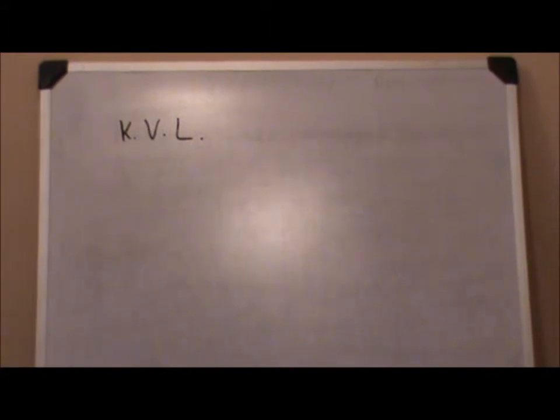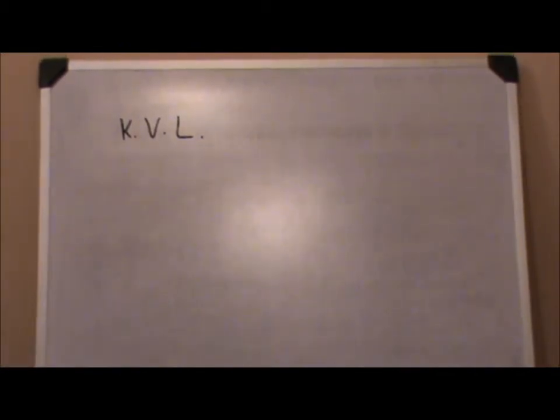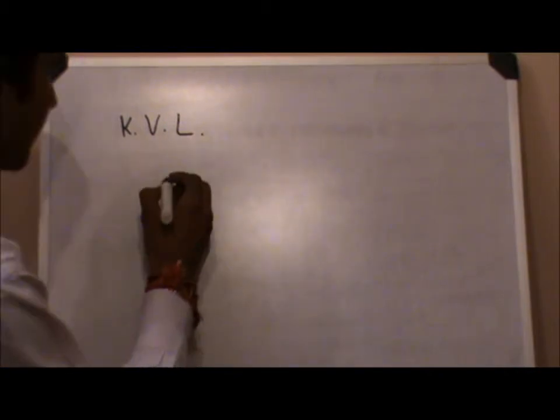KVL stands for Kirchhoff's Voltage Law, so it's going to talk about voltage, which is the potential difference. The statement states that in any circuit or in any loop, the sum of potential drops or potential differences will be equal to zero. That states sum of all the voltages should be equal to zero.